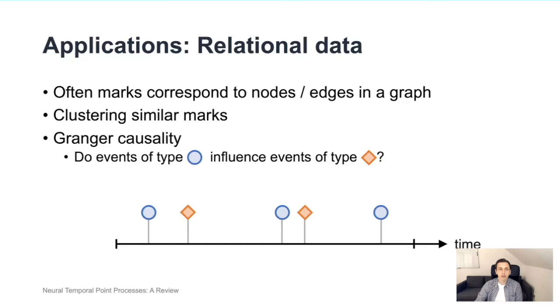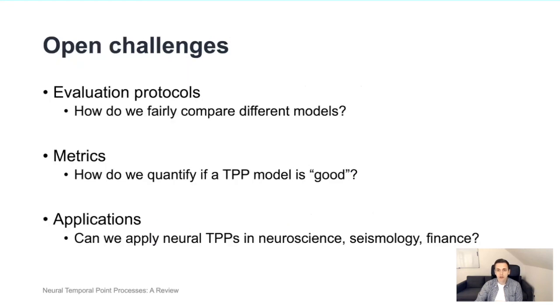Another example is connected to Granger causality, which is just some mathematical framework for defining dependencies between different event types. For example, we can see in this figure below here that usually we have an orange event that follows a blue event. And so if we do Granger causality analysis on such data with a neural TPP model trained on such data, we will likely be able to determine that blue events are likely to cause orange events in this data.